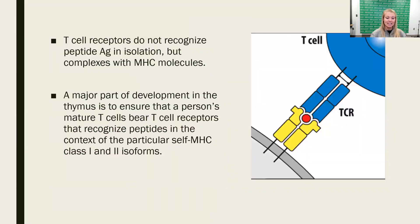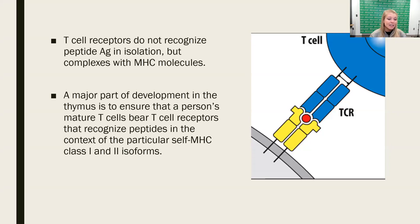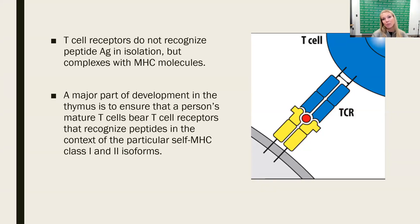In the end, a T cell receptor will recognize antigen. But recall that a T cell receptor can't recognize antigen in isolation — rather, that peptide fragment has to be displayed in conjunction with an MHC class I or class II molecule, depending on the type of antigen. So a major part of T cell development is ensuring that T cells have receptors that can recognize antigen in the context of MHC molecules. Both class I and class II isoforms are necessary for recognition — that's a big part of T cell development, not only antigen specificity, but also the capacity to recognize MHC molecules.